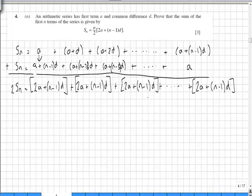And as you can see, this same expression repeats itself n times because this is the sum of the first n terms. So we could factorize that to be 2S_n is equal to n brackets 2a plus (n - 1)d.